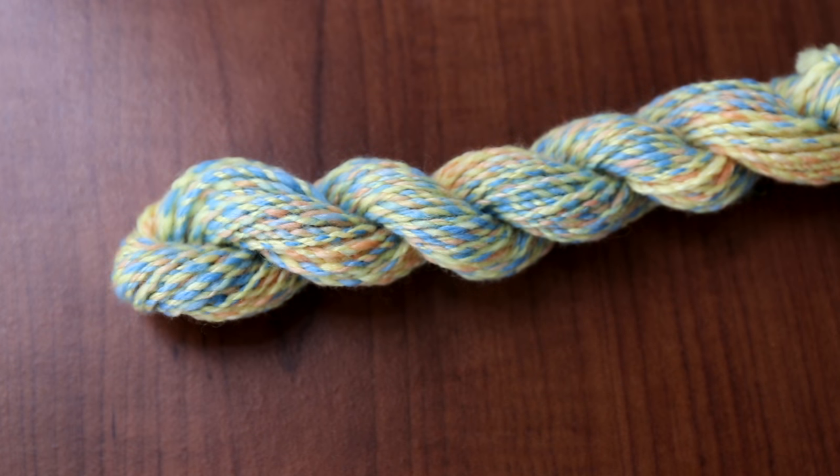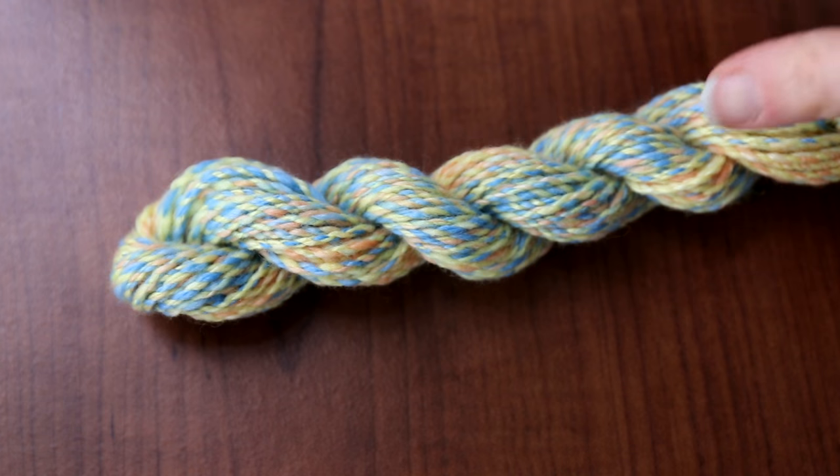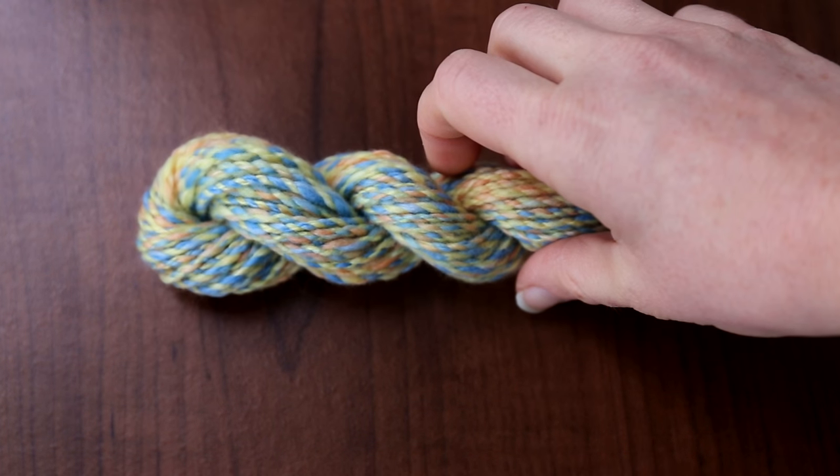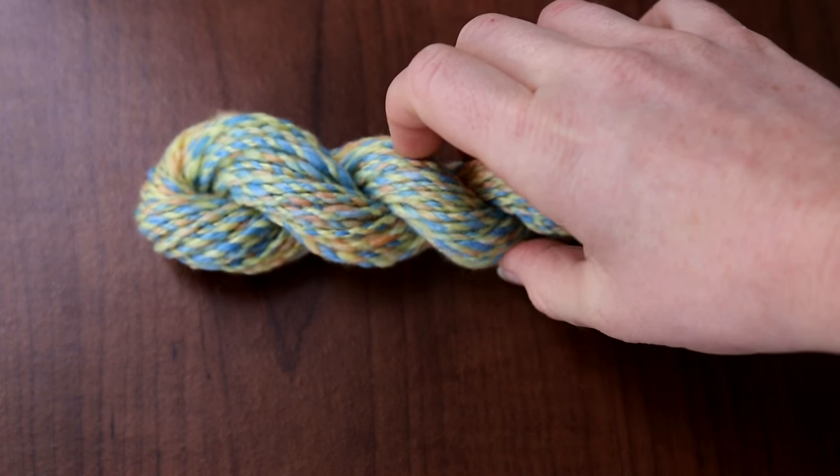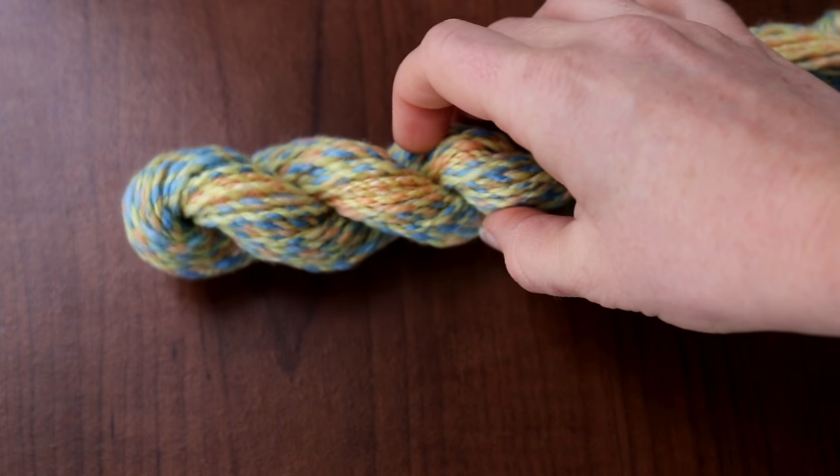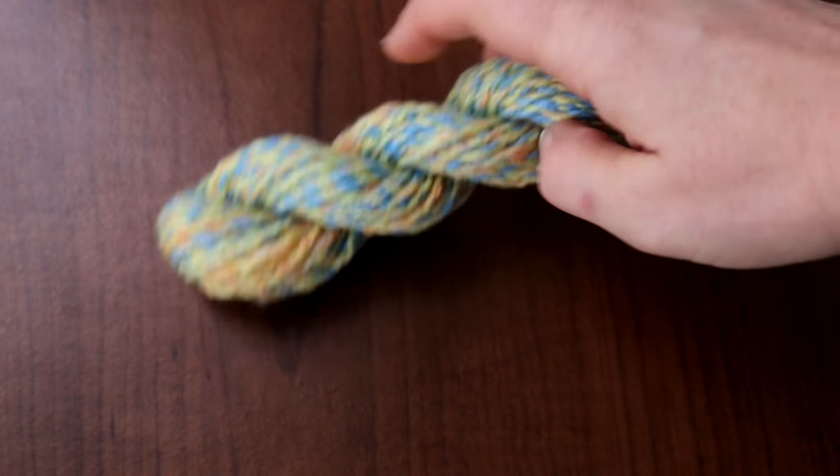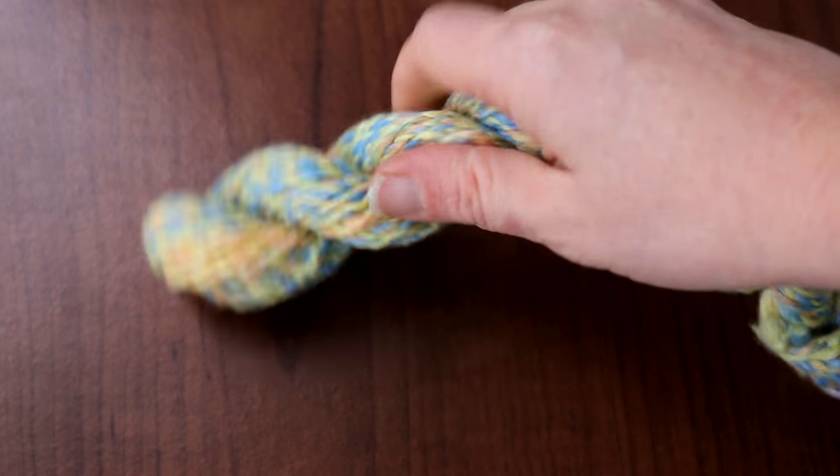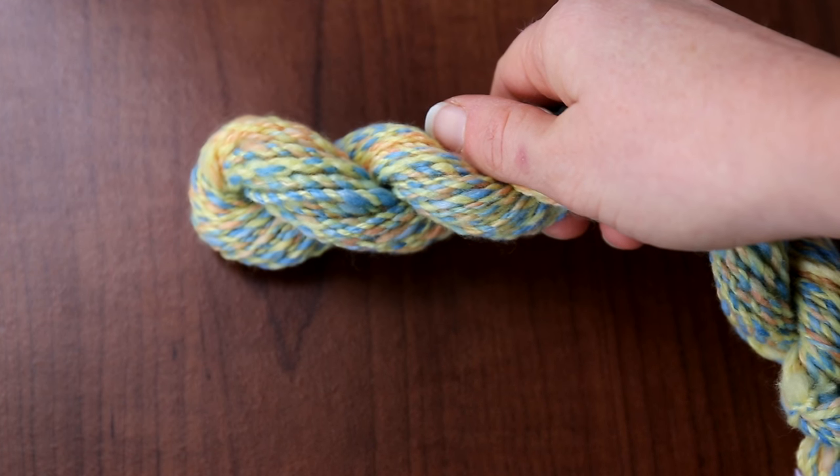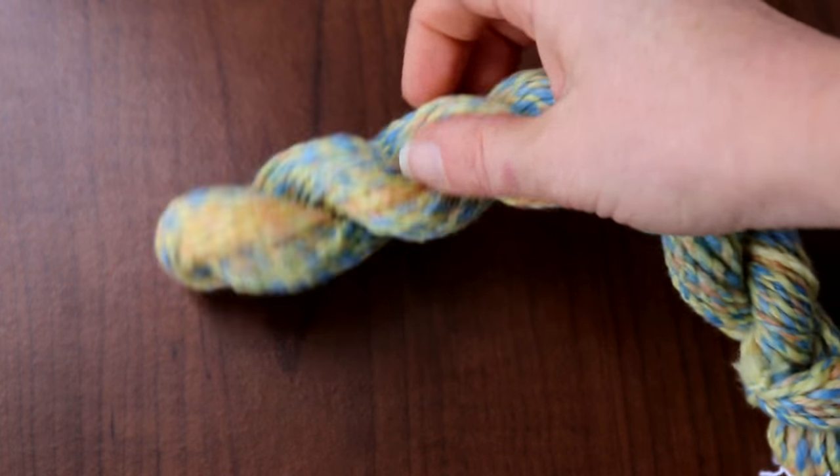Cabled yarns tend to be very sproingy, they tend to have a lot of bounce to them, they tend to have a lot of squoosh factor. I really like cabled yarns for the color techniques - it often will muddy up the color a lot and make them very muted, but it can be very pleasing.